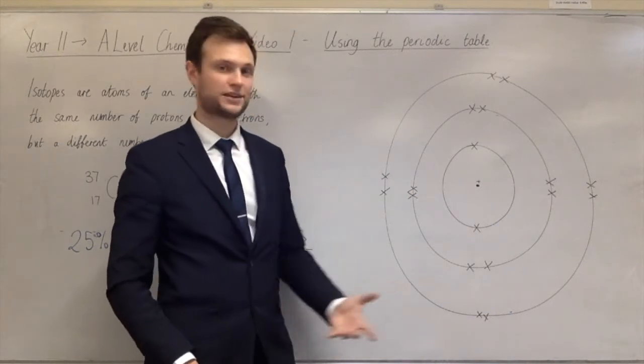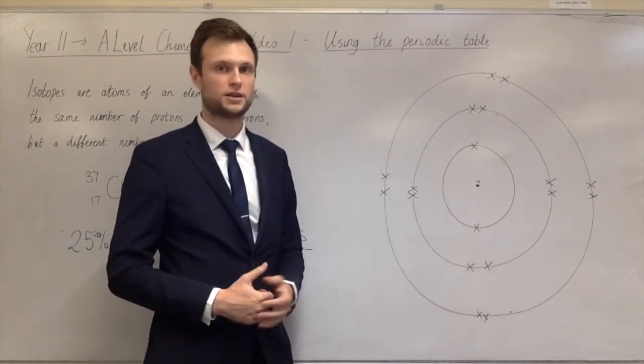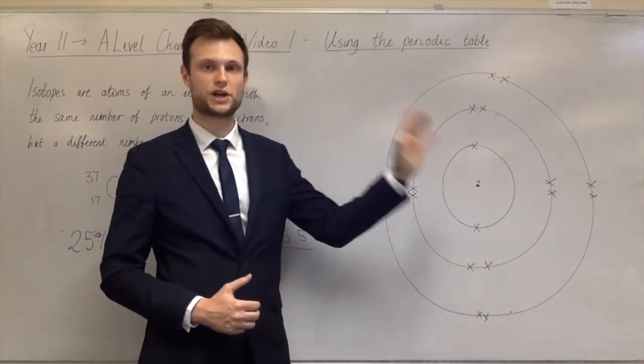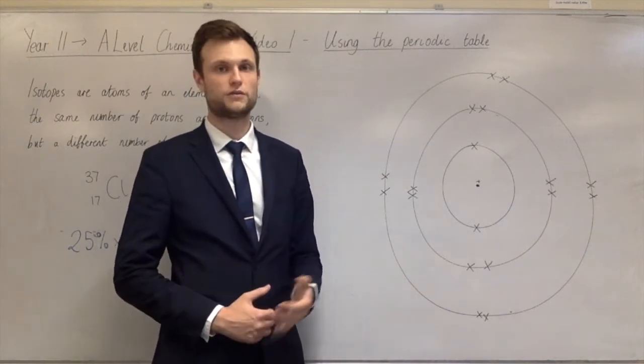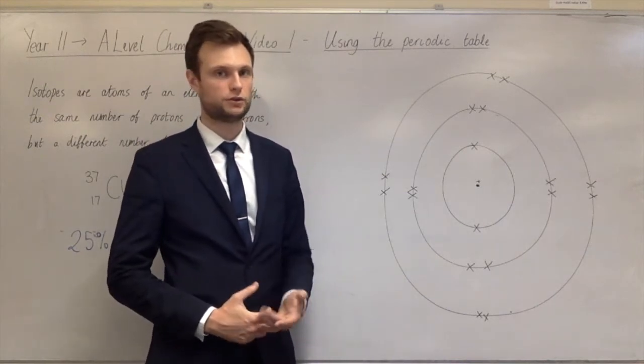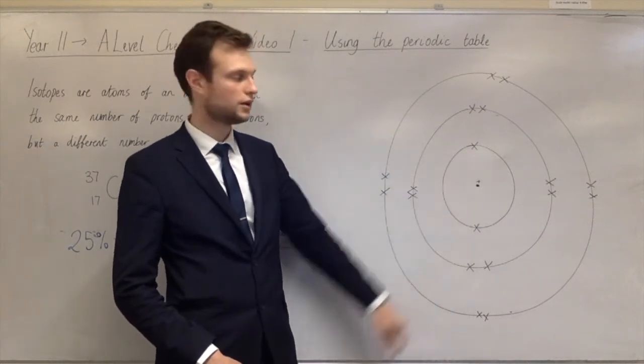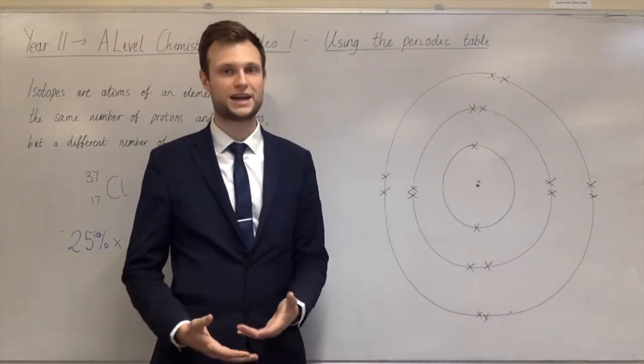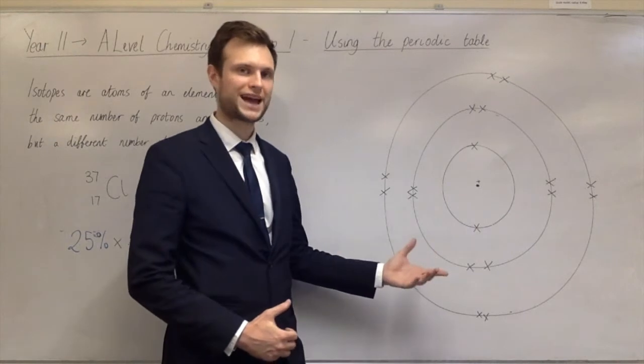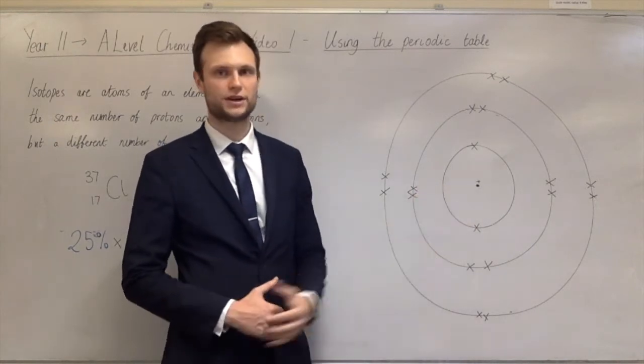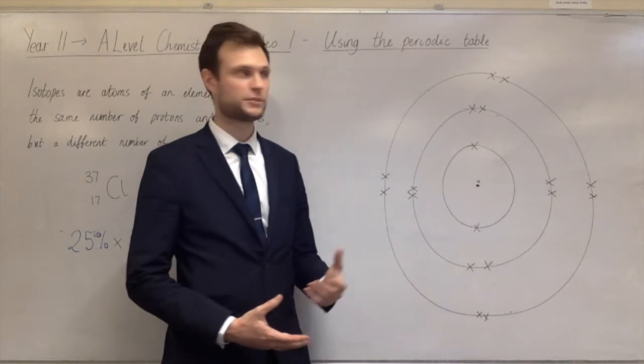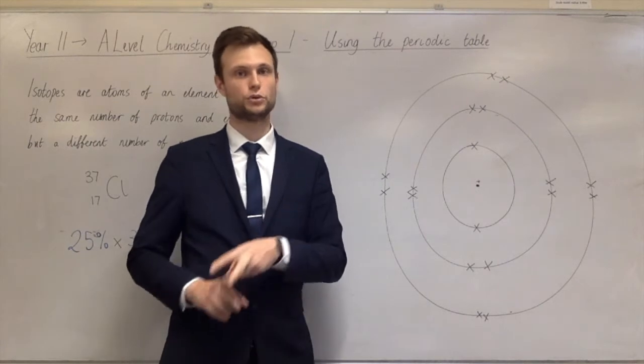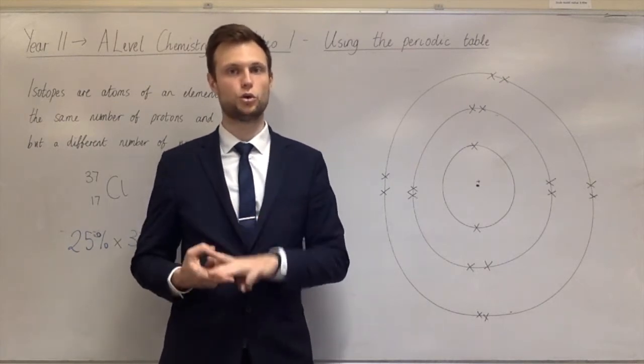At A-level you learn an extension to this model where it's made even more complicated, but the Bohr model is useful because it tells us about the different shells and the different periods of the periodic table. The first period of the periodic table has two elements, those are the two electrons here. The next period has eight elements, the period after that has eight elements as well. And so the periodic table is the shape that it is because the electrons in the atom are in this arrangement. And knowing about this arrangement and how many electrons there are in each of the shells helps you with bonding and structure.